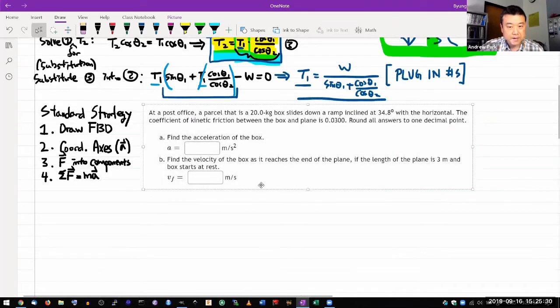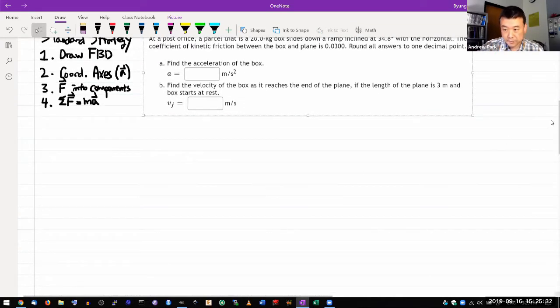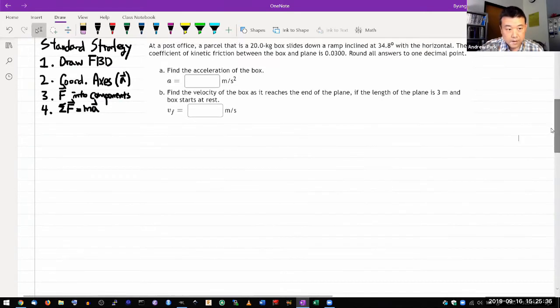It says at a post office, a parcel that is a mass slides down the ramp inclined at some angle from the horizontal, and it gives a coefficient of kinetic friction. Alright, so that's a hint that we should be ready to use friction.